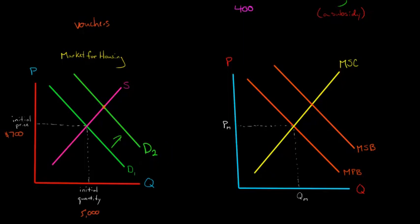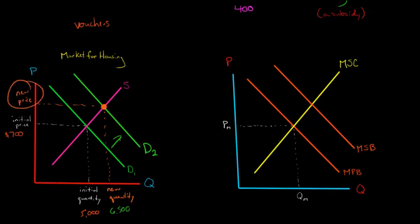So what's going to happen? Now we've got a new equilibrium. Our new quantity is going to be higher — let's say 6,500 — higher than our initial quantity before the vouchers. Our new quantity of housing is higher than before. Now what happens to price? Looking at our new equilibrium and extrapolating to the y-axis, we've got our new price of housing. The new price is higher than the initial price before the voucher — let's say $900 a month versus the original $700.